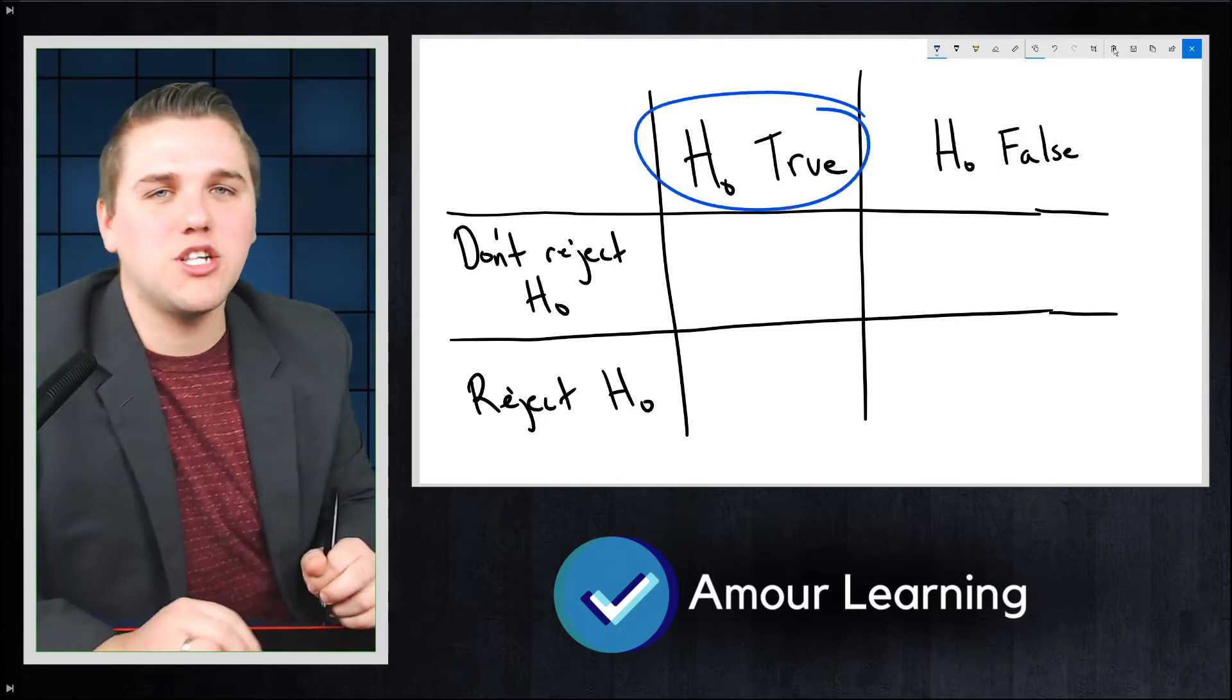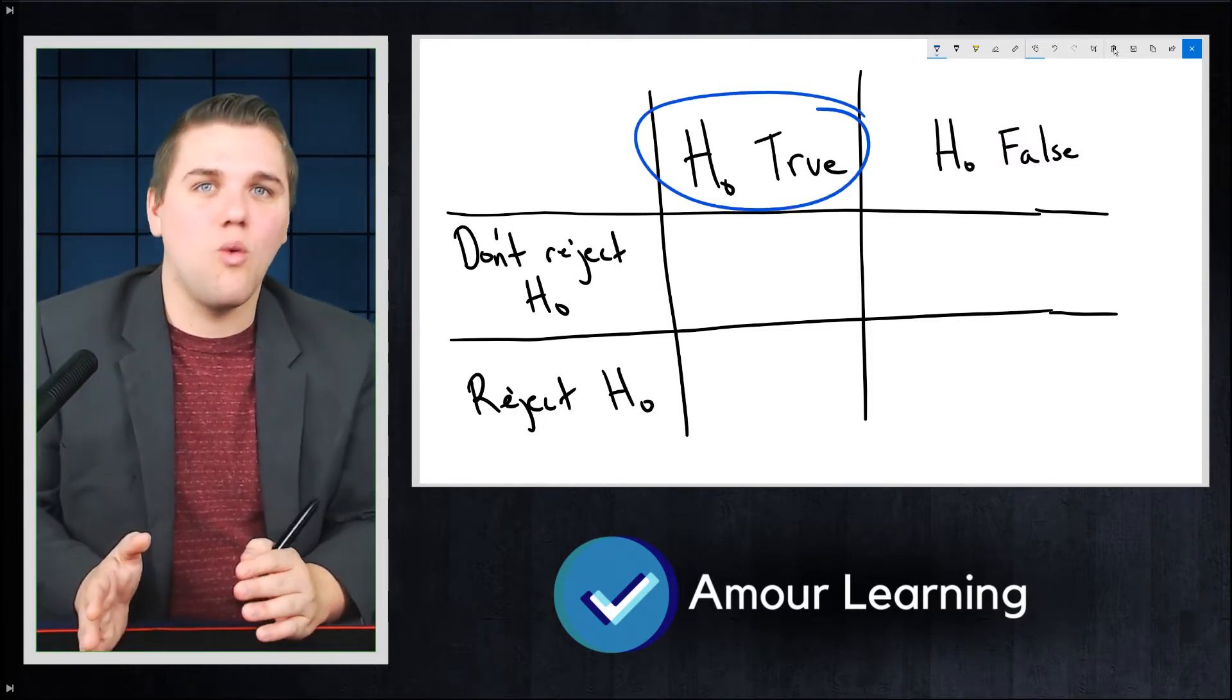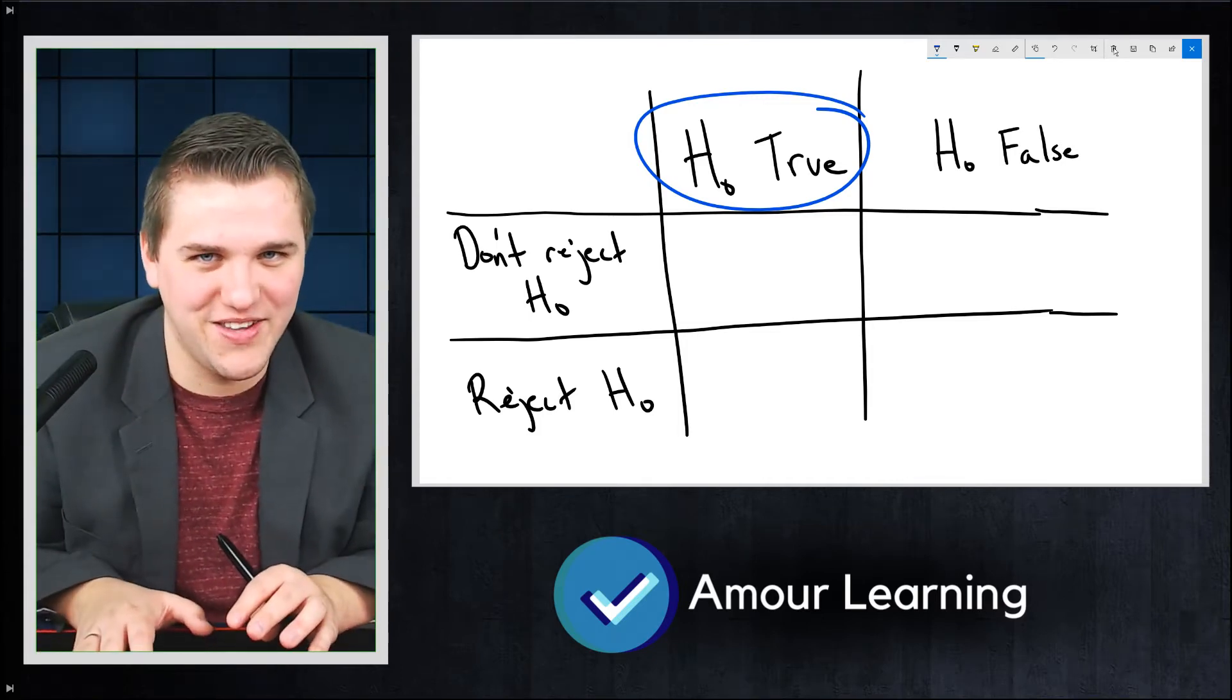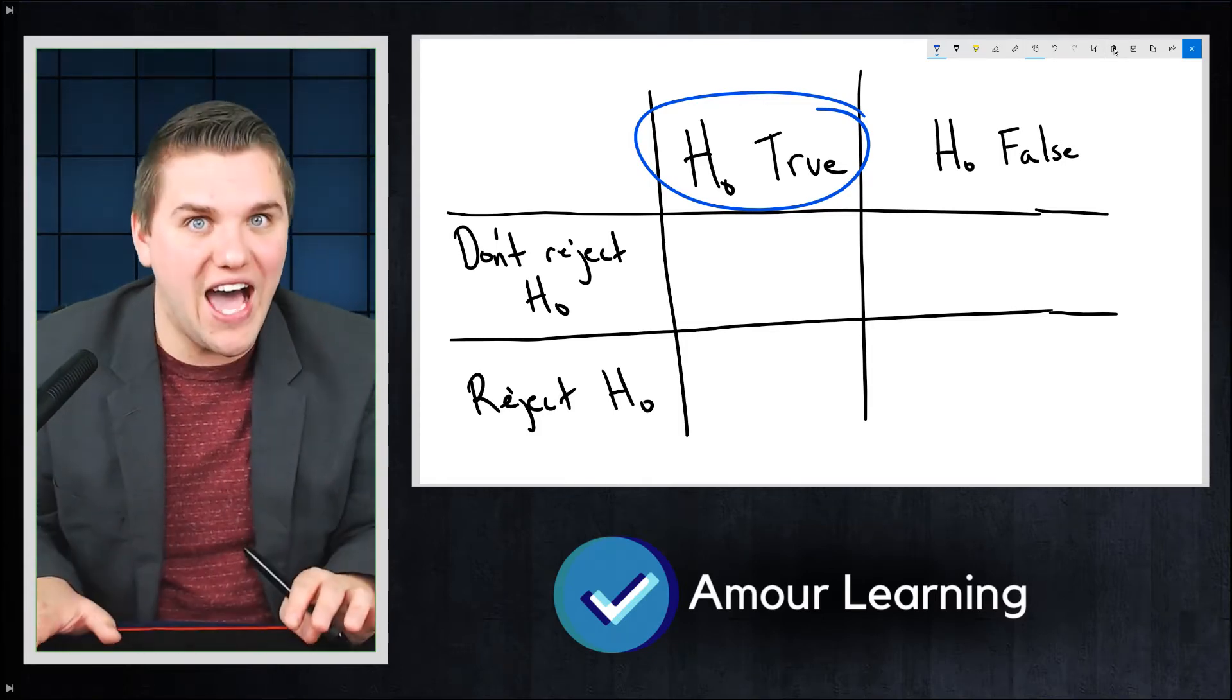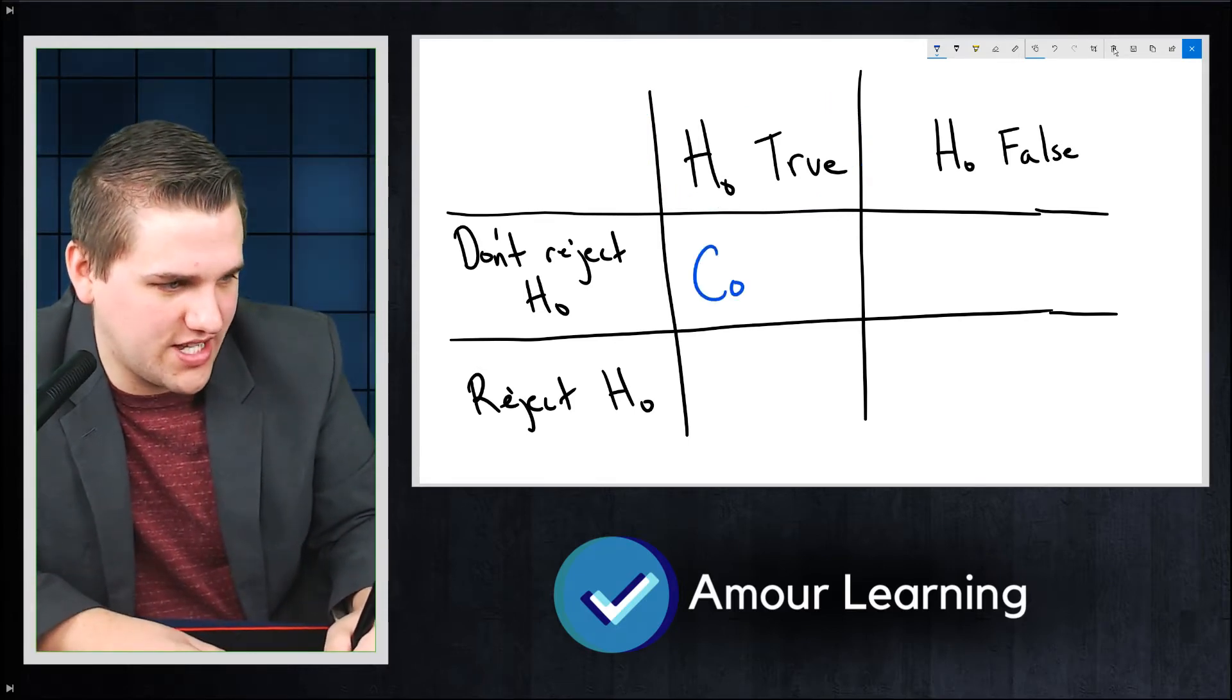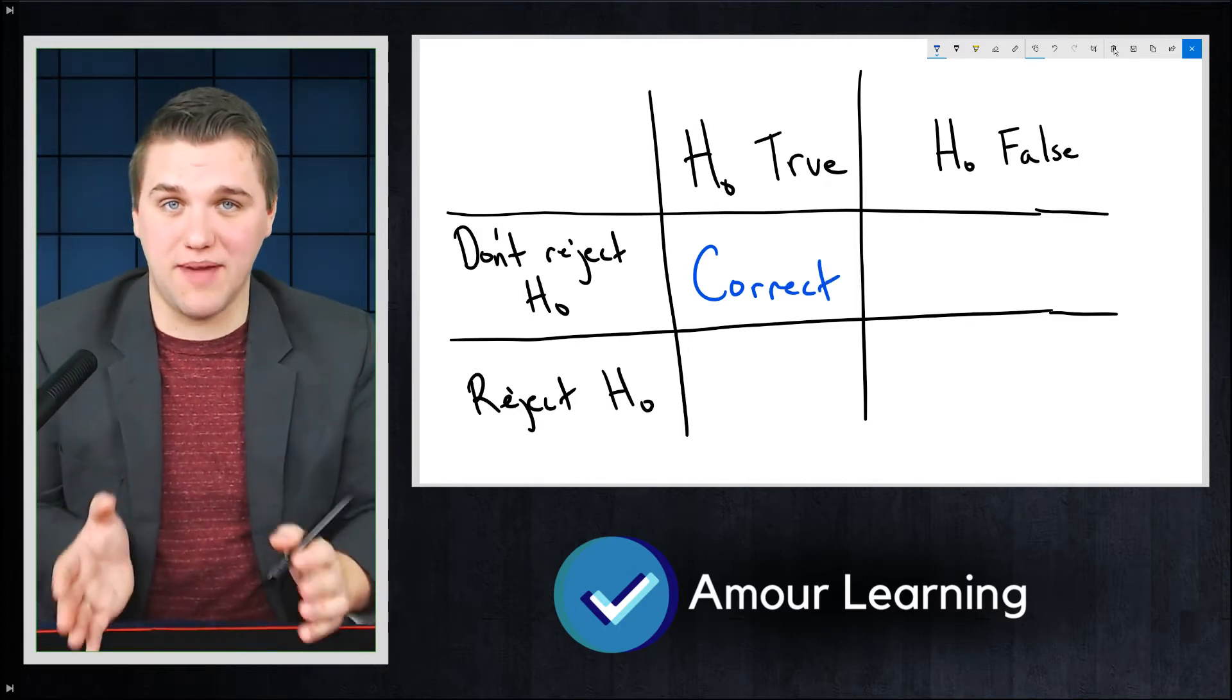For example, let's presuppose that the null hypothesis is true. Well, if the null hypothesis is true, then hopefully we don't reject it. Because if you reject it, that's bad. So hopefully your experiment would show that you should not reject it. That would be the correct decision to make.